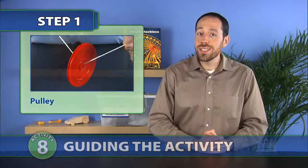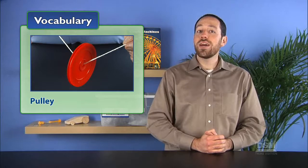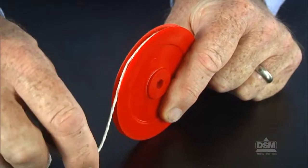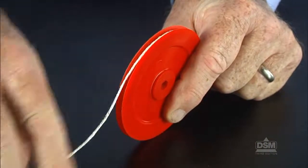To begin the activity, tell students that a pulley is a simple machine consisting of a wheel that rotates around a stationary axle. Show students that the outer rim of the pulley is grooved to accommodate a rope or chain.